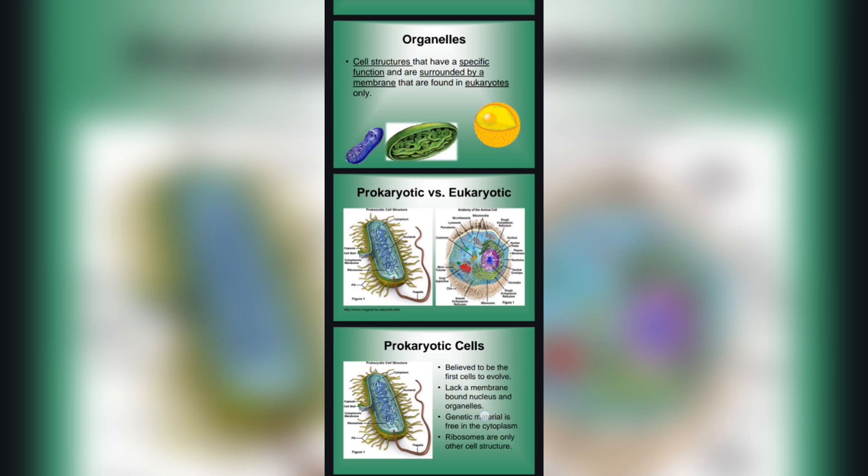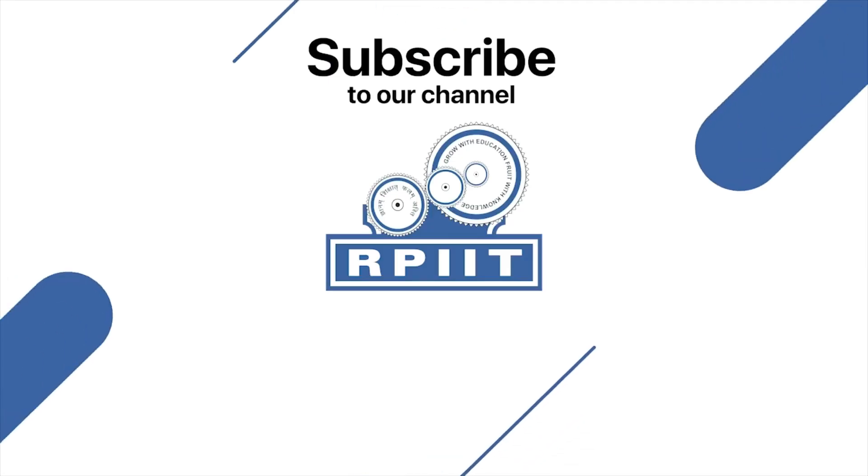And secondly, the anatomy of the animal cell includes: mitochondria, rough endoplasmic reticulum, nucleus, nucleus pores, and plasma membrane.